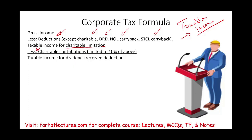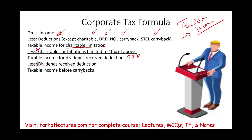Once we get to this number, this is the figure we use for the dividend received deduction. We multiply it by a percentage, and whatever dividend received deduction we receive is subtracted. Then less the short-term capital loss carryback, and that gives us taxable income before carrybacks, and ultimately taxable income.